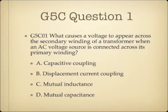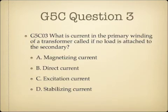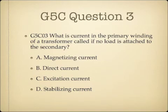Question 1: What causes the voltage to appear across the secondary winding of a transformer when an AC voltage source is connected across the primary winding? A. Capacitive coupling. B. Displacement current coupling. C. Mutual inductance. Or D. Mutual capacitance. Question 2: Where is the source of energy normally connected in a transformer? A. To the secondary winding. B. To the primary winding. C. To the core. Or D. To the plates. Question 3: What is current in the primary winding of a transformer called if no load is attached to the secondary? A. Magnetizing current. B. Direct current. C. Excitation current. Or D. Stabilizing current.